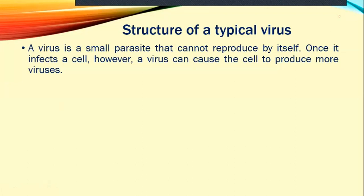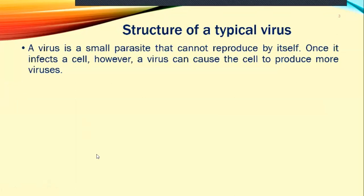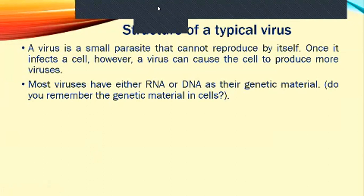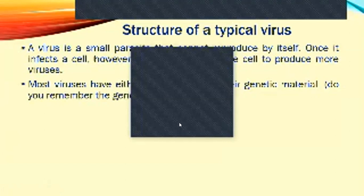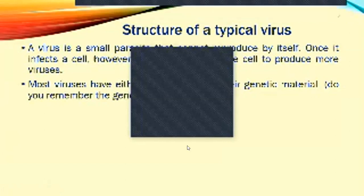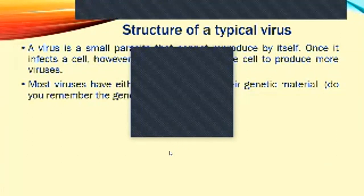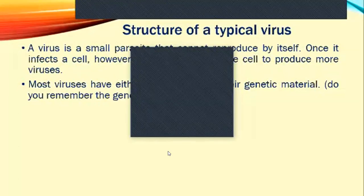A virus is a small parasite that cannot reproduce by itself. Once it infects a cell, however, the virus can cause the cell to produce more viruses. The cell stops producing other things it is supposed to make and starts making virus after virus. Eventually there are so many viruses in your body, and yet they are so tiny — meaning you can fit very many of them in a small space.